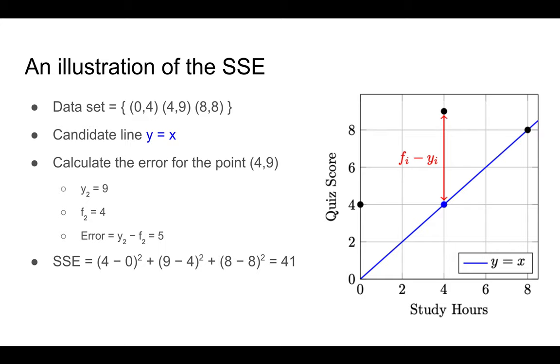Let me illustrate how to compute this SSE, the sum of squared errors. Let's say these are the three data points, and we're considering the candidate line y equals 2x. If you want to calculate the error for the point, the observed value 4, 9, the difference between the actual value and the predicted value is 5, so you'd have to compute 5 squared. You need to do the same thing for the other two points, and you can calculate that the sum of squared errors is 41 in this case.